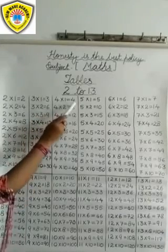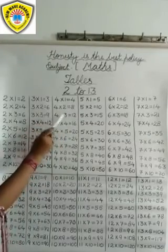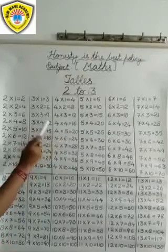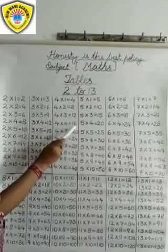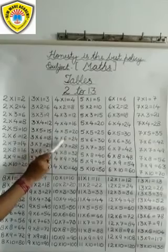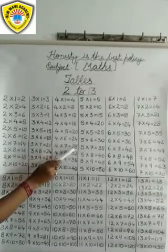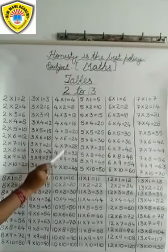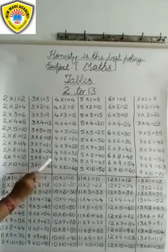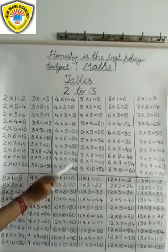4 1s are 4. 4 2s are 8. 4 3s are 12. 4 4s are 16. 4 5s are 20. 4 6s are 24. 4 7s are 28. 4 8s are 32. 4 9s are 36. 4 10s are 40.